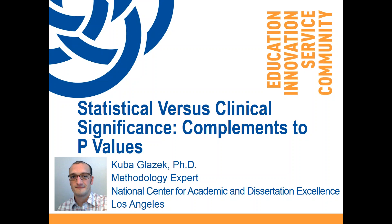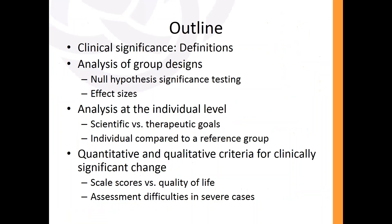So with that, we can get started. As the title slide mentions, this presentation is all about clinical significance versus what's traditionally known as statistical significance. With statistical significance, you get these p-values, which is always that sort of magic number we're looking for. But clinical significance is another side of the coin that is often overlooked in research, and so this presentation is designed to cover those issues and go over some nitty-gritty details.